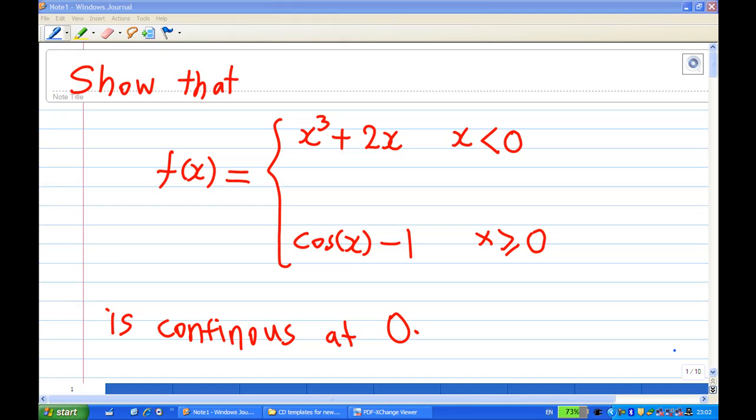Hi, for this recording, I will show you how to show that the function f, which is x² + 2x for x less than 0, and cosine x minus 1 for x greater than or equal to 0, is continuous at the point x equal to 0.